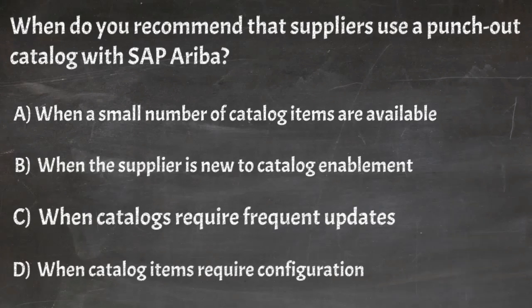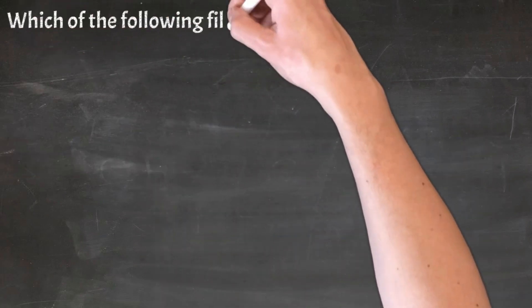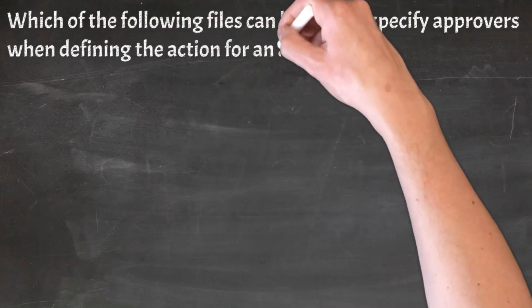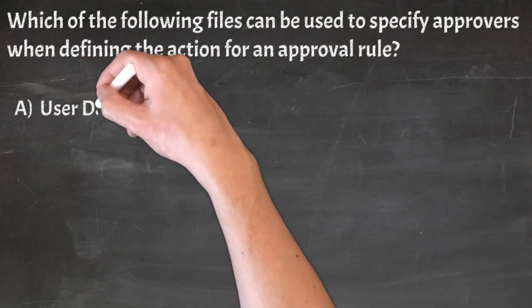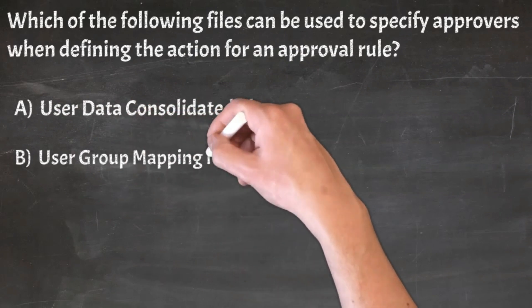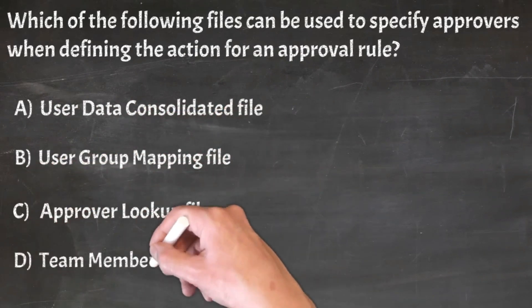Correct answer: C. When catalogs require frequent updates. Question 7: Which of the following files can be used to specify approvers when defining the action for an approval rule? A. User data consolidated file, B. User group mapping file, C. Approval lookup file, D. Team member rule file.